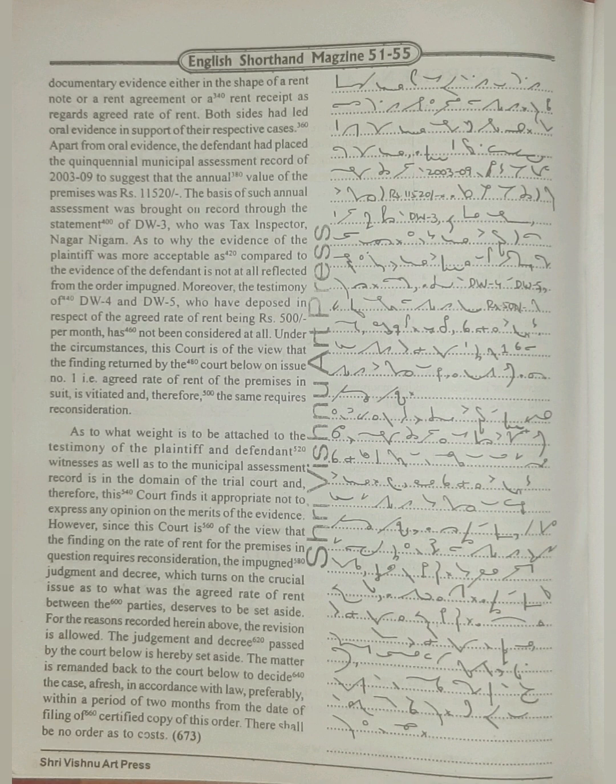Moreover, the testimony of DW4 and DW5, who have deposed in respect of the agreed rate of rent being Rs. 500 per month, has not been considered at all. Under the circumstances, this court is of view that the finding returned by the court below on Issue No. 1, that is agreed rate of rent of the premises in suit, is vitiated and therefore the same requires reconsideration.